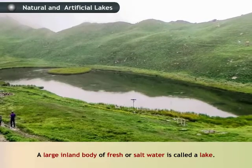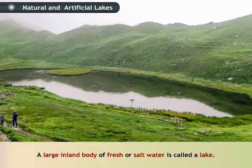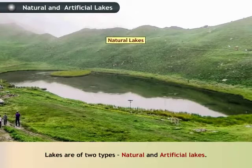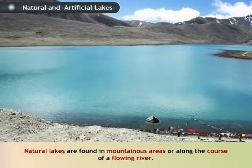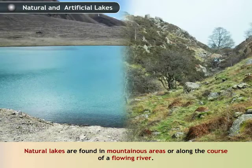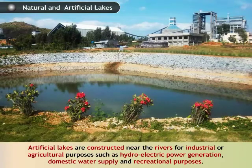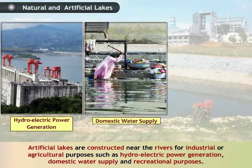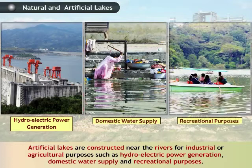A large inland body of fresh or salt water is called a lake. Lakes are of two types: natural and artificial lakes. Natural lakes are found in mountainous areas or along the course of a flowing river. Artificial lakes are constructed near the rivers for industrial or agricultural purposes, such as hydroelectric power generation, domestic water supply and recreational purposes.